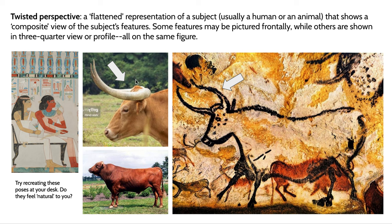Twisted perspective is more obvious in human figures. In ancient Egyptian wall paintings, the torsos are twisted so both shoulders are visible even though the legs are in profile. These poses don't feel natural — they're not copied from direct observation of nature, but rather a mental conception: these elements go together to make a human, these things go together to make a bull.